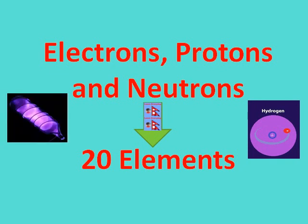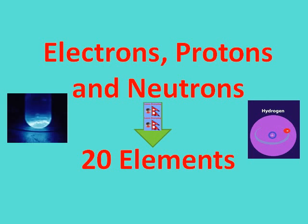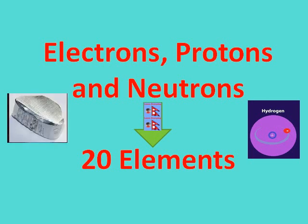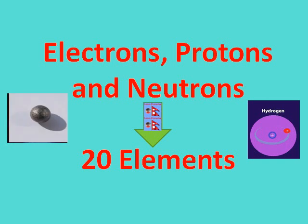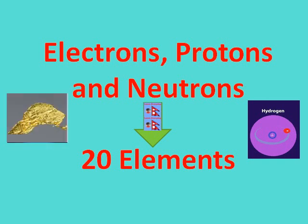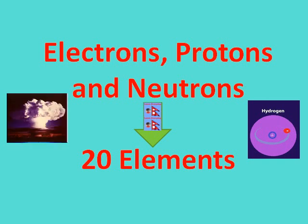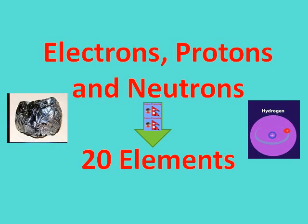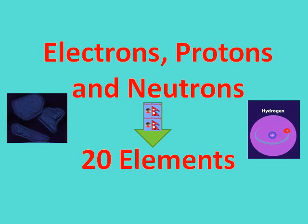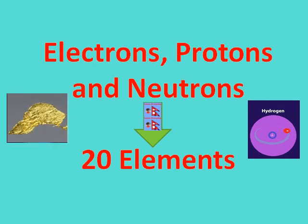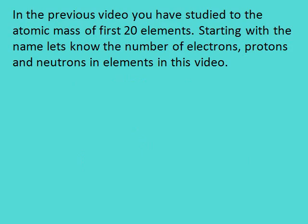Welcome back. In the previous video I shared the ideas and simple formula to calculate the atomic masses of the first 20 elements. Today I am here again with a closely similar topic — I would like to share how to find the number of electrons, protons, and neutrons in the first 20 elements.